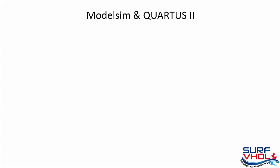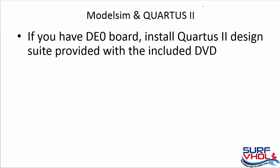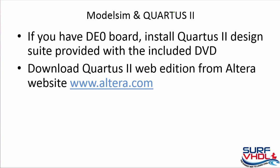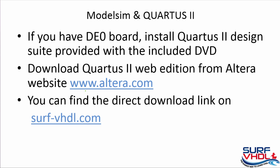If we want to simulate and lay out our code we have to use ModelSim and Quartus. If you already have the DA0 board, simply install the Quartus 2 Design Suite provided with the included DVD. If you don't have the DA0 board, you can download the Quartus 2 Web Edition from the Altera website at altera.com. To find a direct download link, simply go to surf-vhdl.com where there is a blog post that will guide you to download the suite.